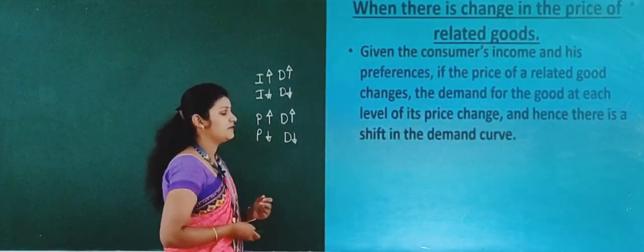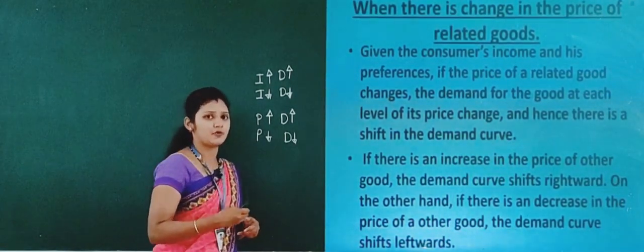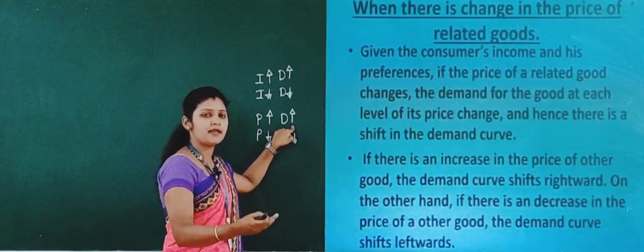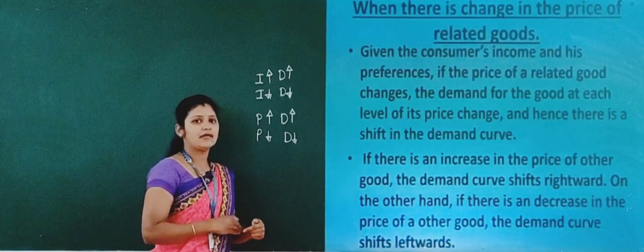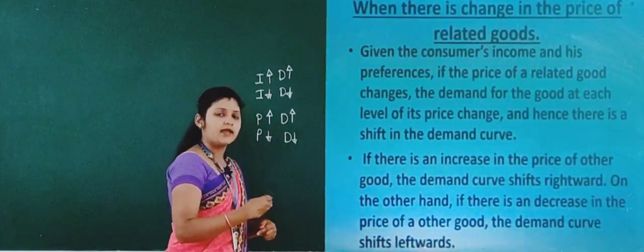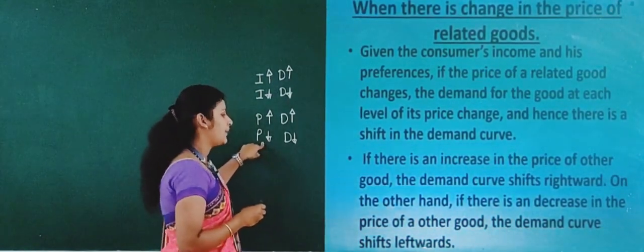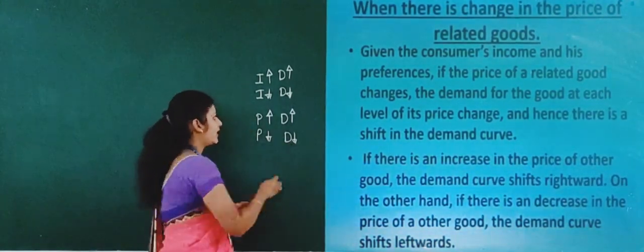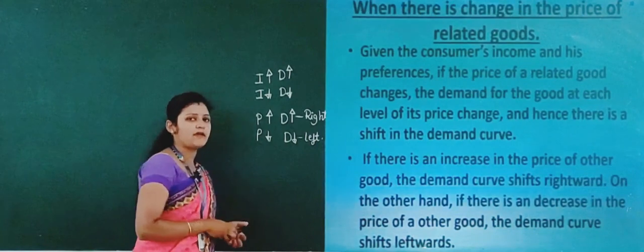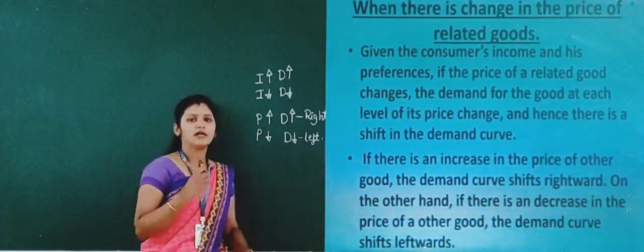If there is an increase in the price of another related good, the demand curve shifts rightward, because demand increases. If there is a decrease in the price of the other related good, the demand will shift leftward because demand decreases.